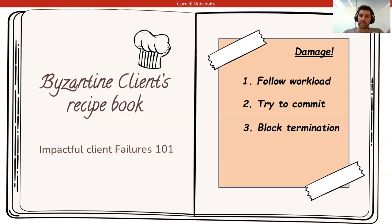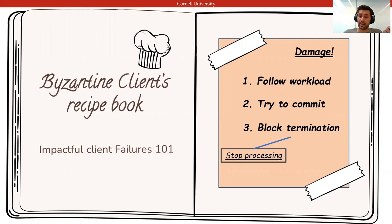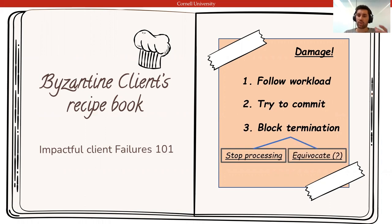If it followed the previous steps diligently, a client can then harm the progress of conflicting transactions by stalling the termination of its own committing transaction. It can do so in two ways: either by stopping processing — for example, pretending that it crashed — or by collecting conflicting quorums of votes and equivocating during the optional phase needed for durability.